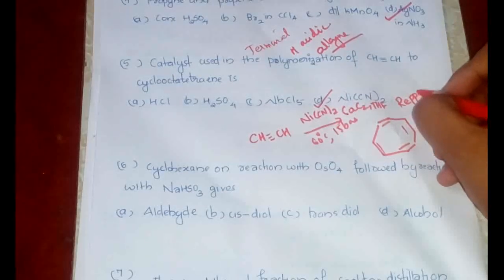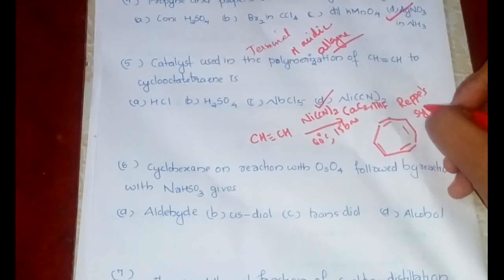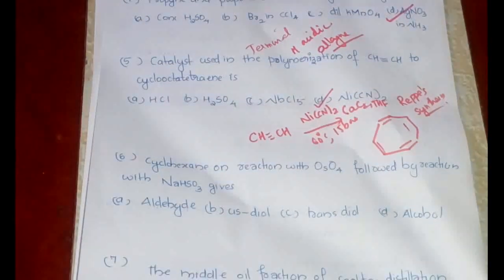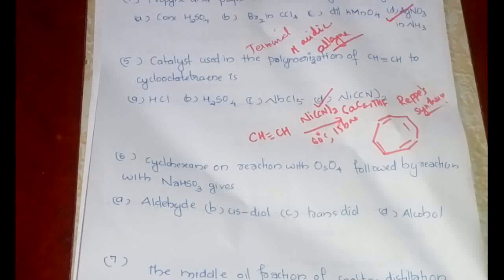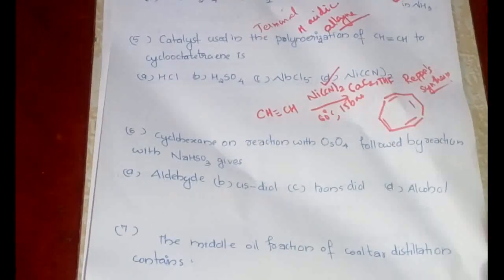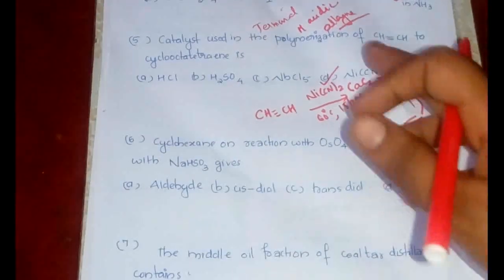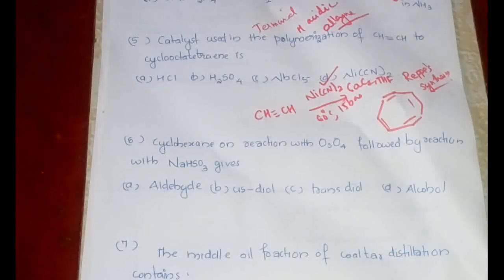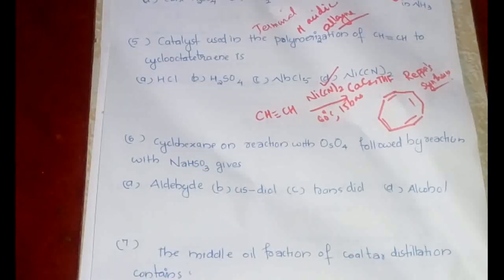So from acetylene we can form a cyclic compound, that is cyclooctatetraene, using the catalyst Ni(CN)2. This particular reaction can be useful even when questions are asked from organometallics, or from the coordination complexes, the catalysis part. If questions come, this can be useful there as well.